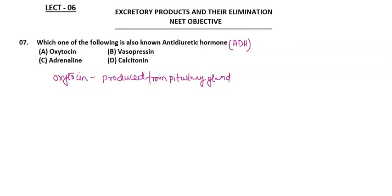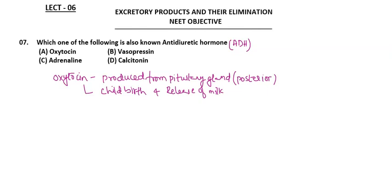Oxytocin from the posterior pituitary is responsible for childbirth and also release of milk from mammary glands after childbirth. Vasopressin is also called anti-diuretic hormone and is also produced from the posterior pituitary gland.